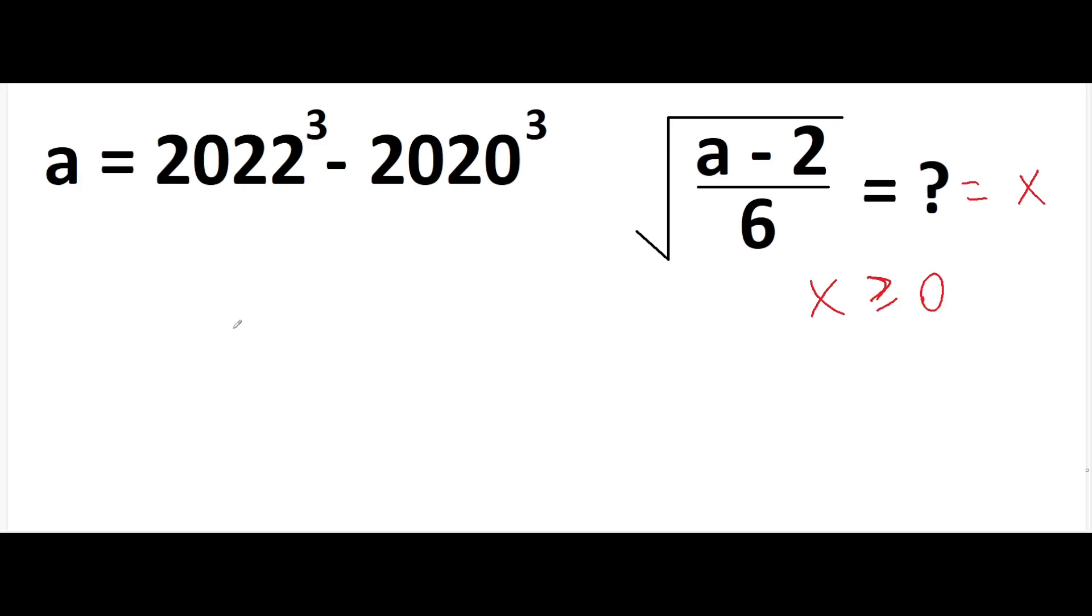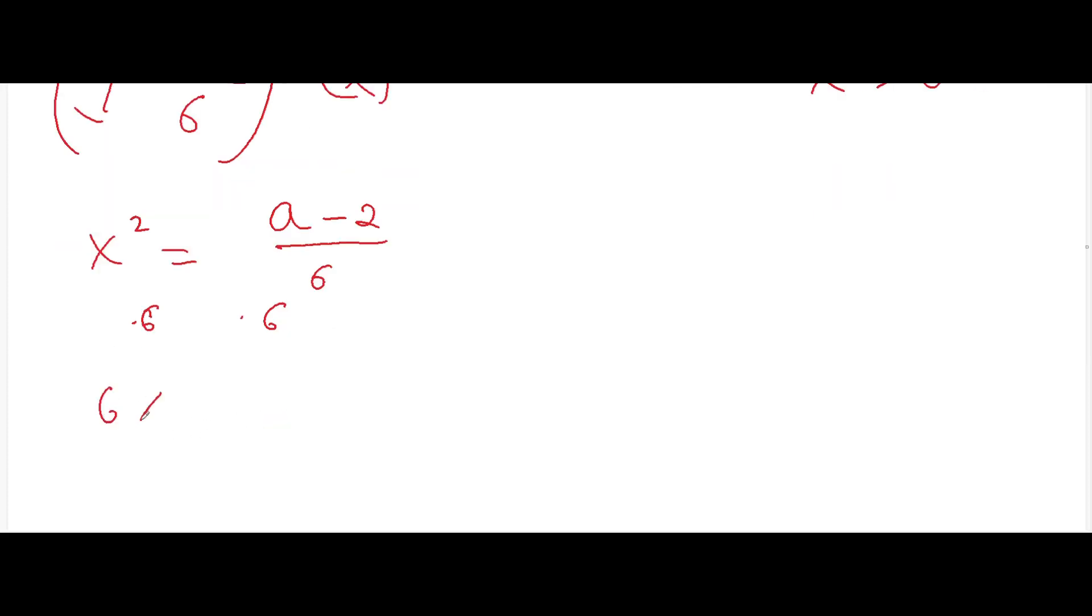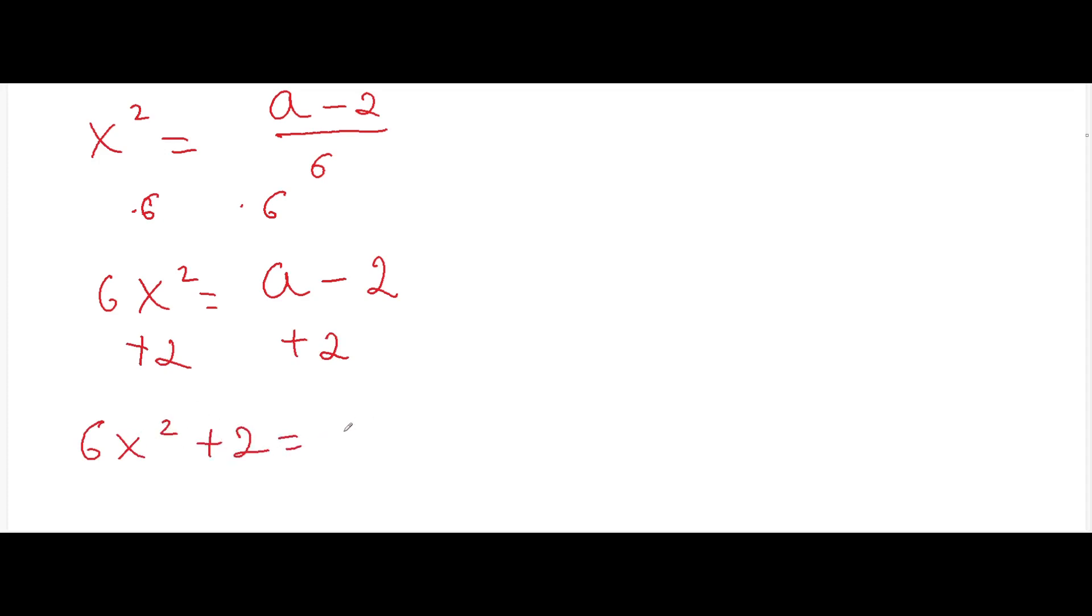Now we can square up these two sides. The square root of a minus 2 over 6 is equal to x here. If we square up both sides, we will get that x squared will be equal to a minus 2 over 6. If we multiply both sides by 6, we will get 6x squared will be equal to a minus 2. We can now add 2 to both sides and we will get 6x squared plus 2 will be equal to a.